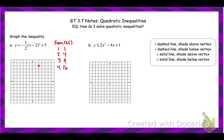But because it's been compressed and reflected, our new way of moving from the vertex is: right 1 and down one half, right 2 and down 2, right 4 and down 8. We'll have those same points on the other side because of the axis of symmetry. And because this is less than — not 'or equal to' — we're going to use a dashed or dotted line to sketch our parabola.